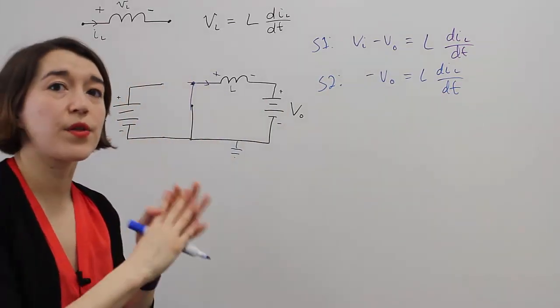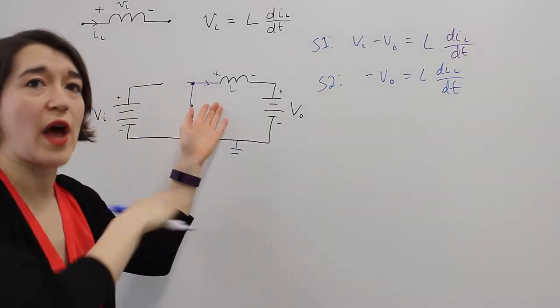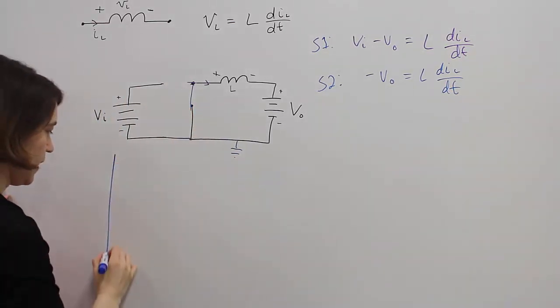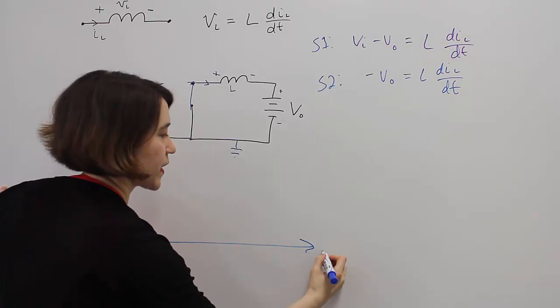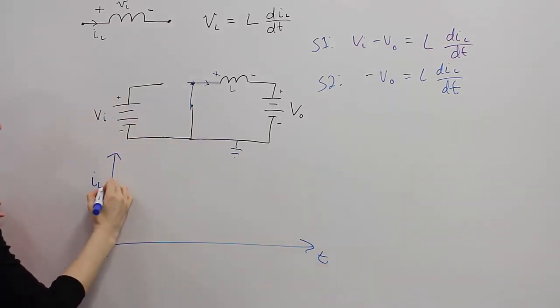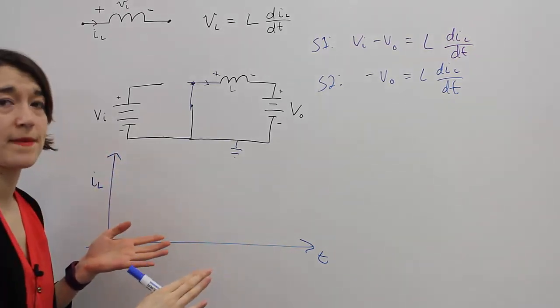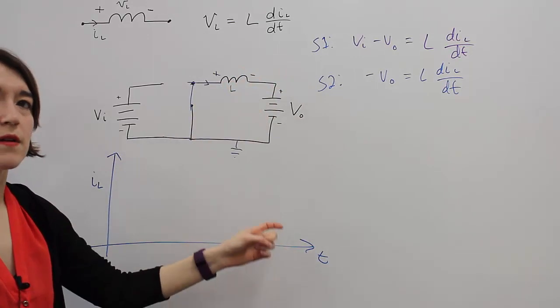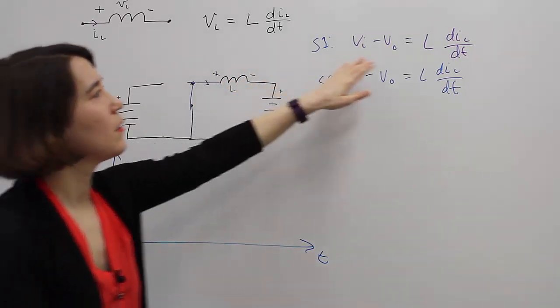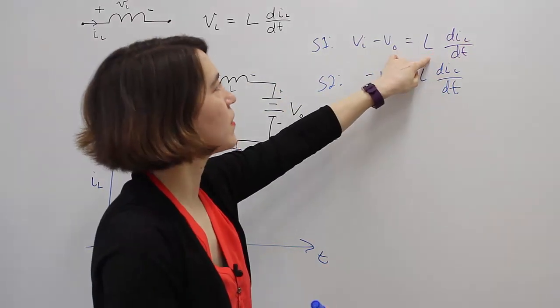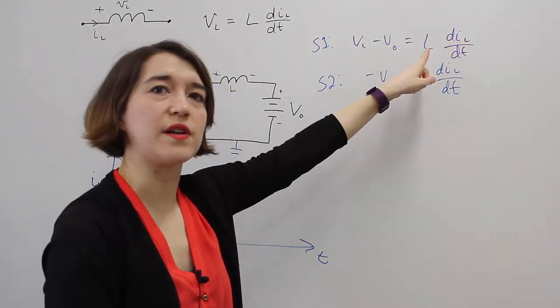We're going to talk about how the current looks as it's going through the inductor. So what we want to draw is a graph over time of the IL current through the inductor over time. So we're going to do our two states real quick. We're going to look at these equations. I'm going to break it down a little bit. So here we want to look at the change in the current.